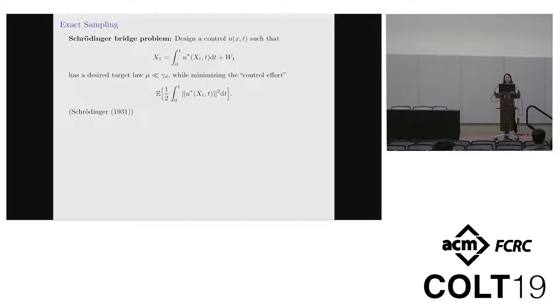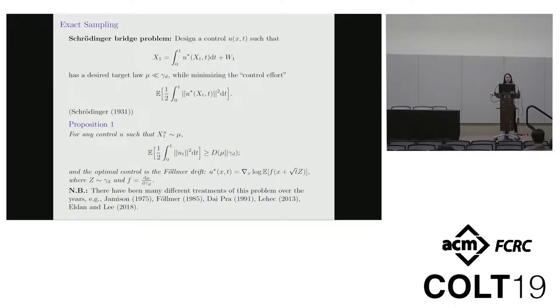This sets us up for the question of sampling. Consider the Schrödinger bridge problem of starting from a Gaussian and finding some control on drift, here U, that once you attain some target density, the density that you desire with respect to a Gaussian by time one, while minimizing the control effort that you've spent. This is a classic problem that many treatments from many different perspectives over the years, I've listed just a tiny subset.